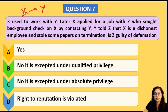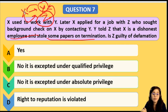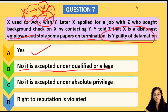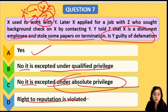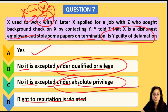Next: X worked with Y. Later, X applied for a job with Z. Z decided to do a background check and contacted Y, X's former employer. Y told Z that X is a dishonest employee and that on termination, X stole some papers from the firm. Is Y guilty of defamation? The answer is option B — No, it is accepted under qualified privilege. Asking a past employer for a reference is normal and genuine, and the past employer's opinion is also genuine. Therefore Y is not liable because he has qualified privilege.